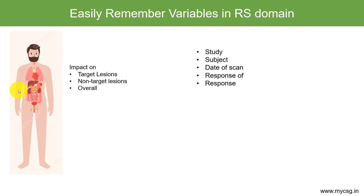We need to know the response type and the actual response — whether it is a complete response, partial response, or stable disease. We also need to know who evaluated the response. As seen in previous videos on TU and TR domains, there can be multiple reviewers, such as investigators at the site or evaluators at a central reading facility. If there are multiple evaluators, we need a specific identification for each evaluator.